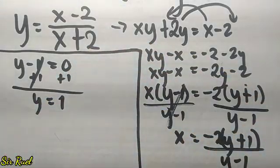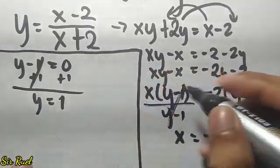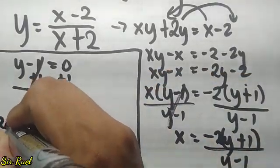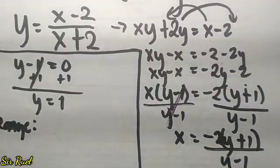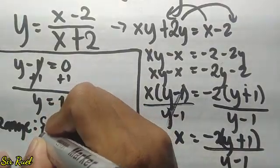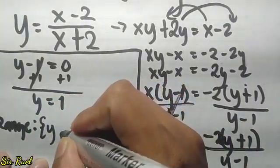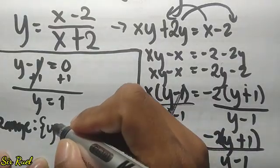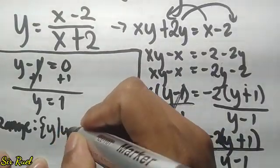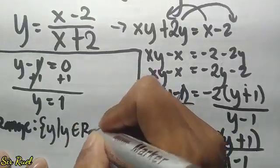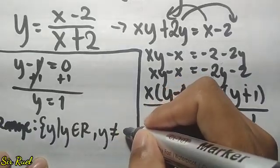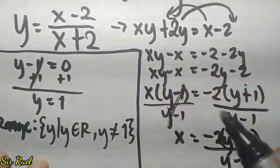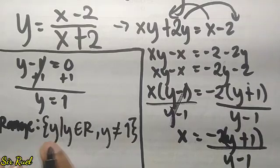Therefore, our range is written using set-builder notation the same way. Range equals the set of y such that y is an element of the real numbers where y is not equal to 1. That's our answer for the range.